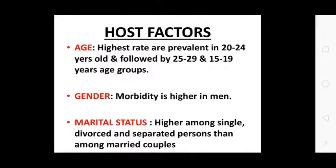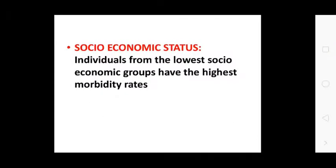Age: The highest rate of prevalence is in the 20–24 years age group, followed by 25–29 and 15–19 years age groups. Gender: Morbidity is higher in men. Marital status: Higher among single, divorced, and separated persons than among married couples. Socioeconomic status: Those emerging from the lowest socioeconomic groups have the highest morbidity rates.